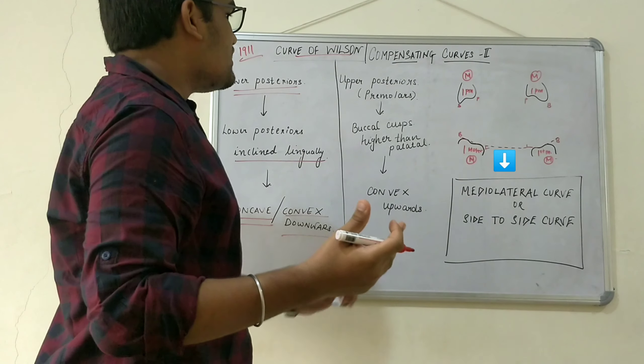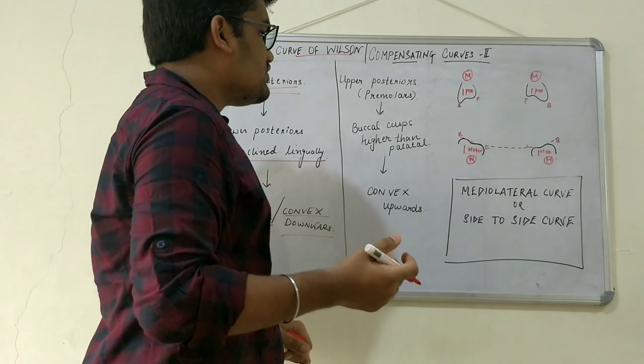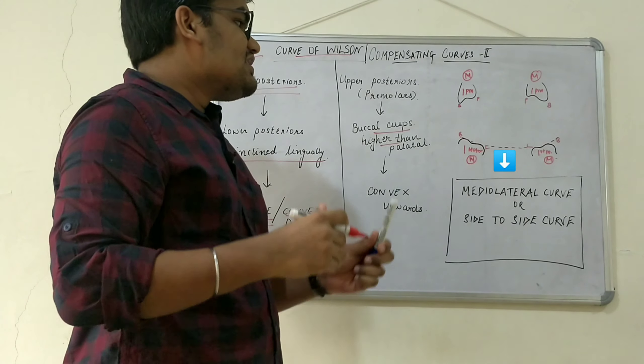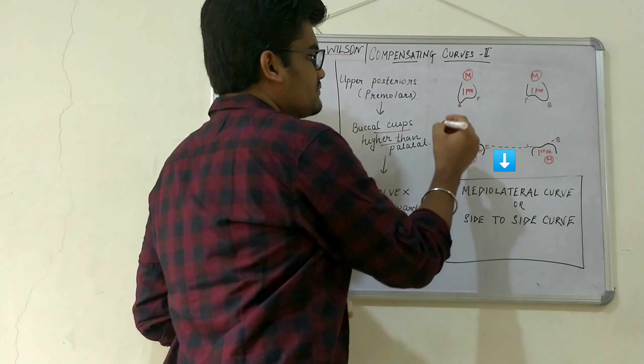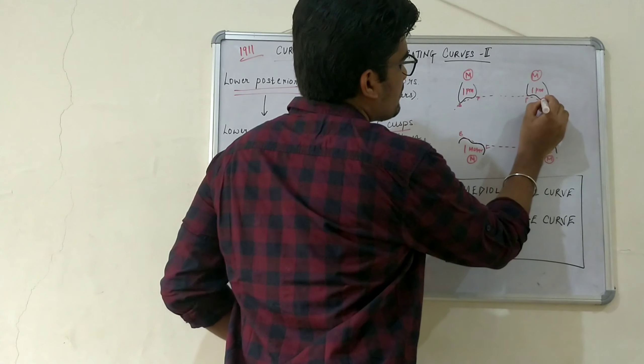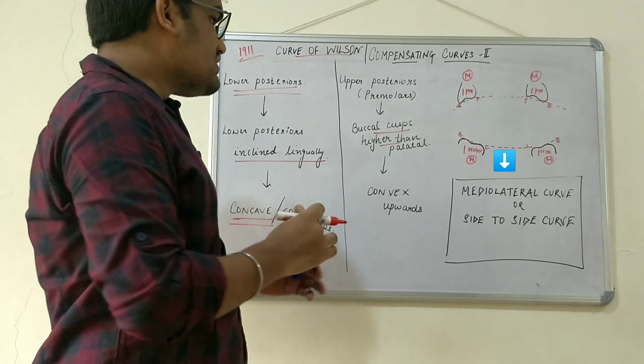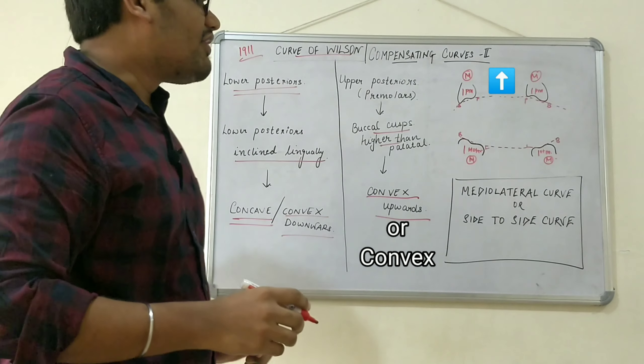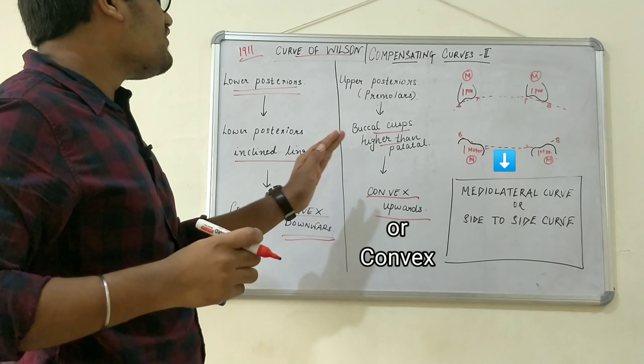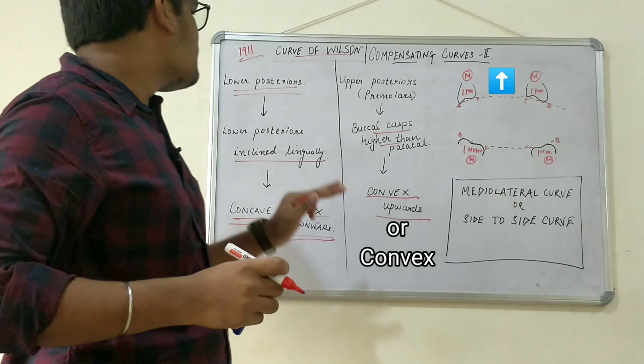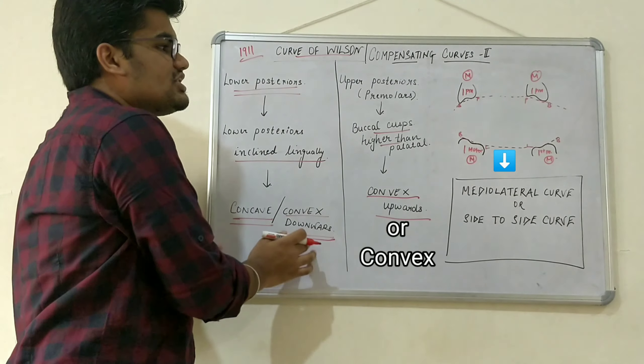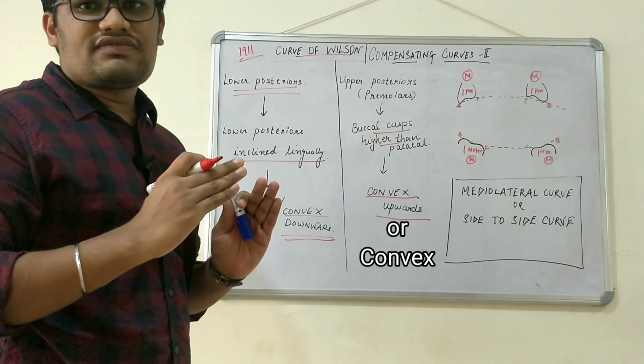If we observe the first premolars, we usually see that the buccal cusps are always higher than the palatal cusps. In this case, the direction of the curve is exactly opposite—it's convex upwards, whereas in lower posteriors it was convex downwards. So the curve of Wilson direction for upper posteriors is convex upwards, whereas for lower posteriors it is concave or convex downwards. The direction usually results because of the inclination of the teeth.